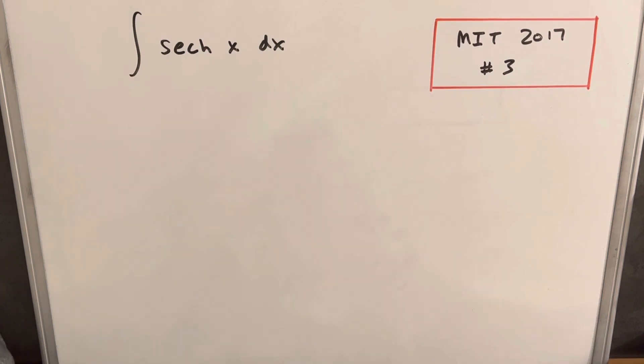This is MIT Integration B 2017, problem number three. This is the integral of hyperbolic secant of x dx.